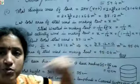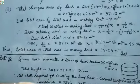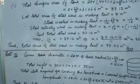Therefore the area of the steel used in making the tank is 95.04 m². Now we will look at the 10th question.